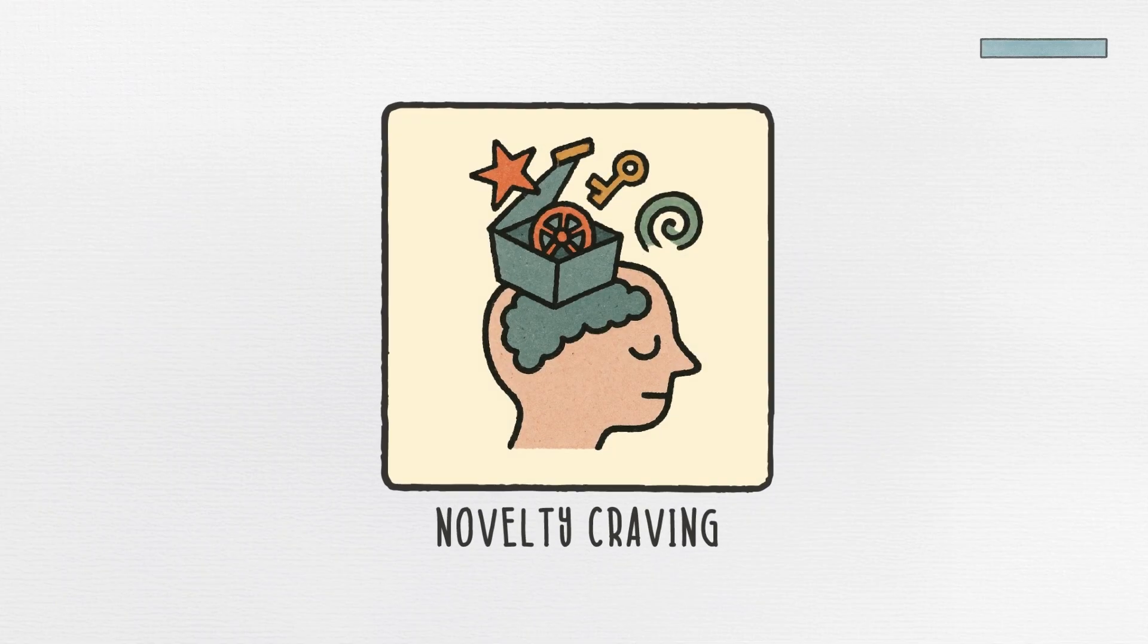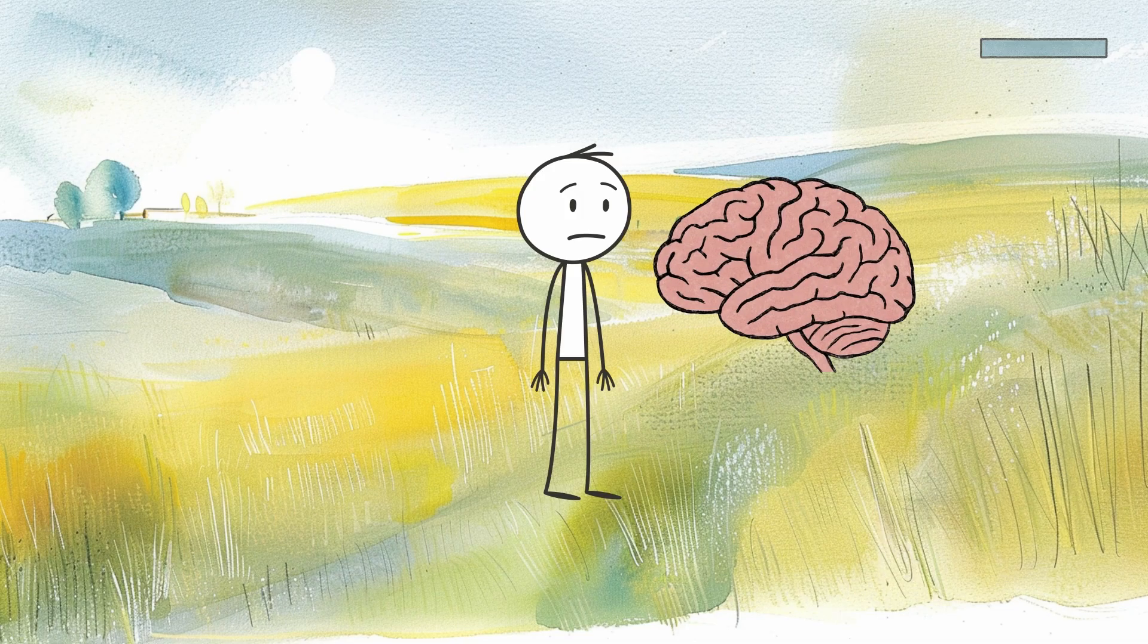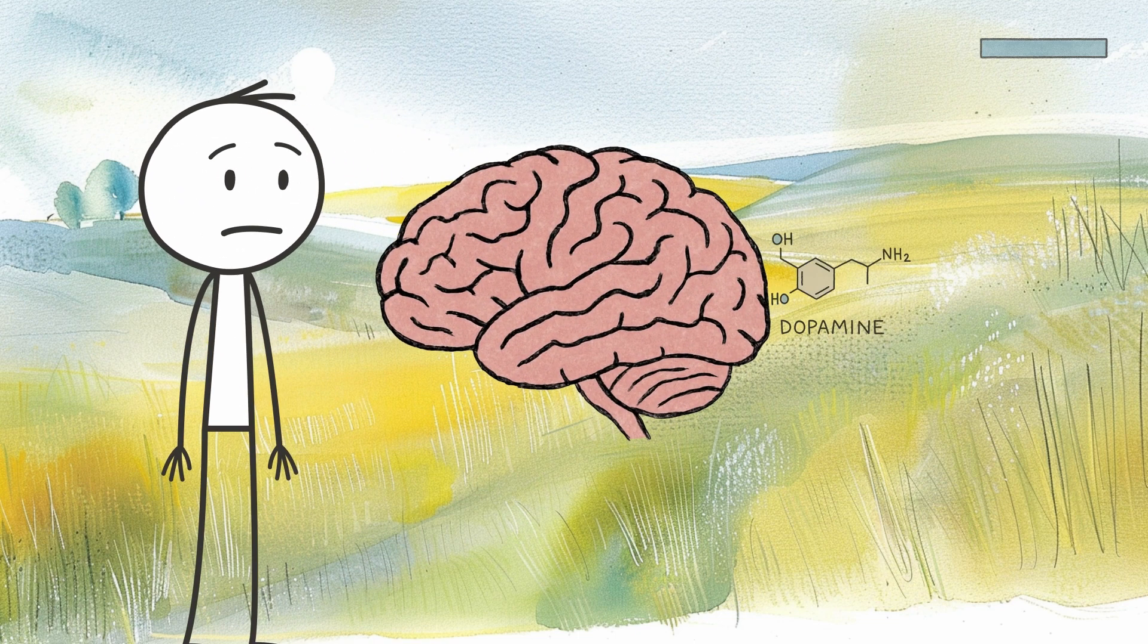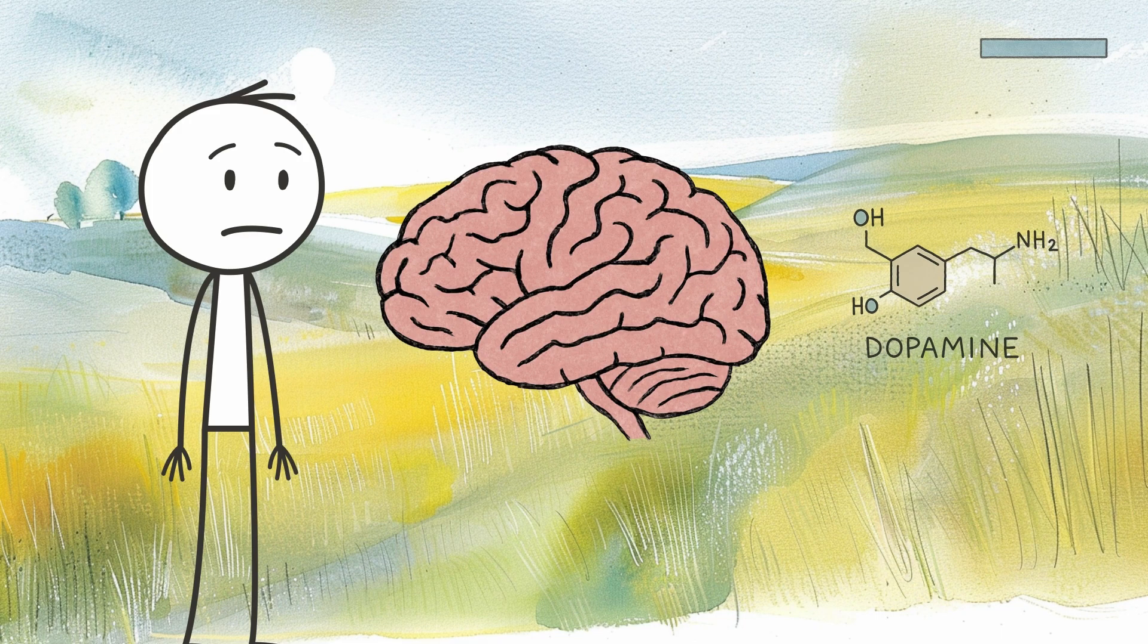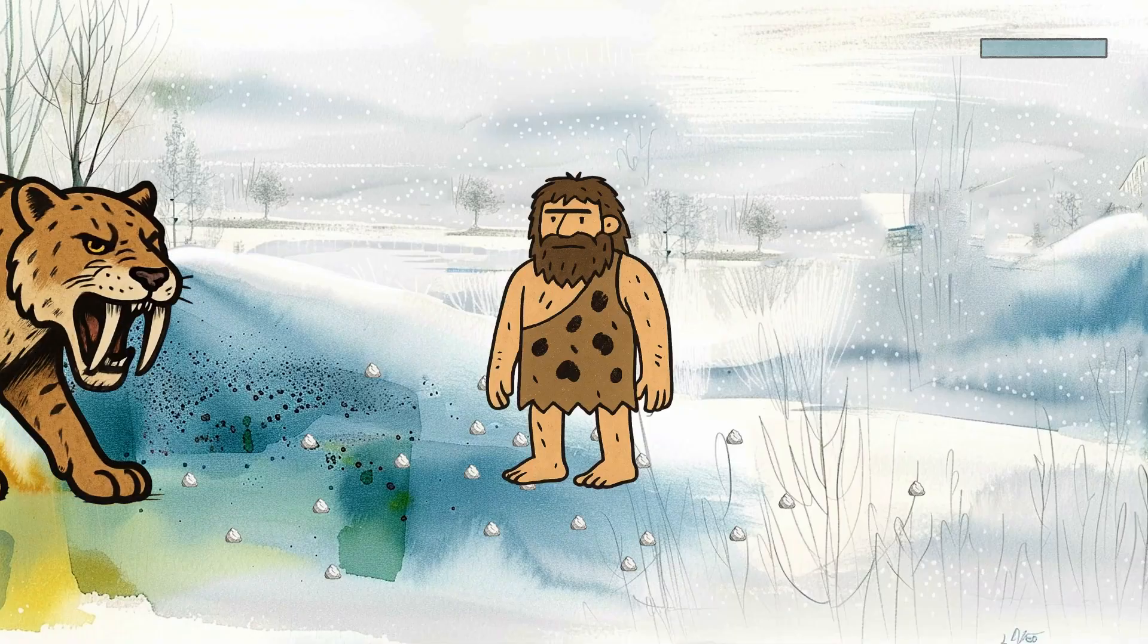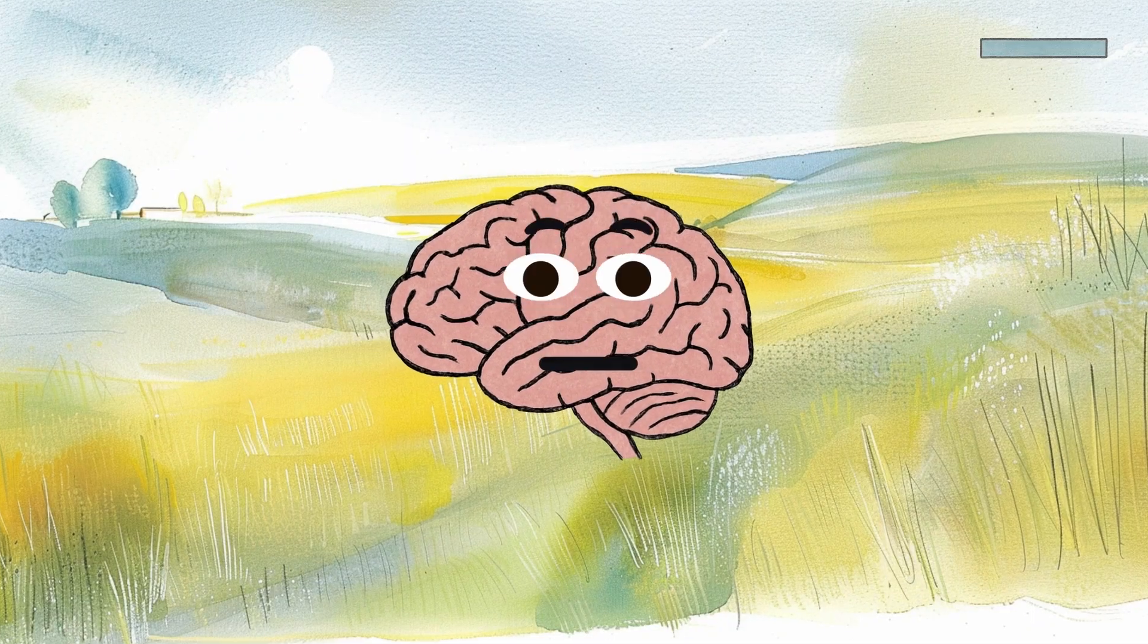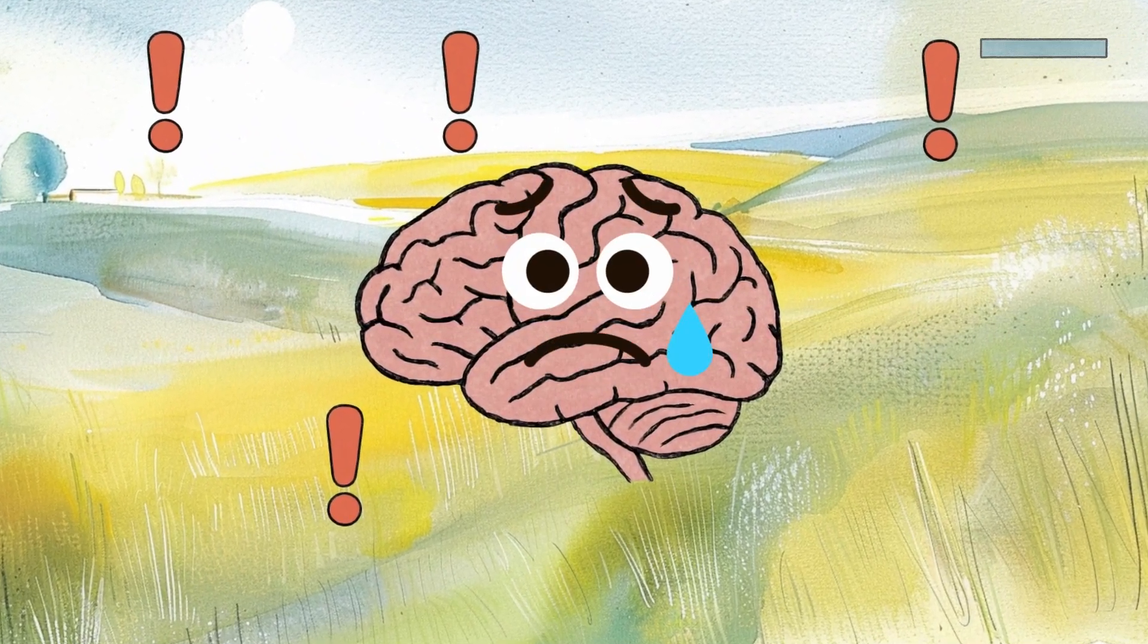Number one. Novelty craving. Human brains are wired to seek out new, unpredictable experiences. Novel stimuli trigger dopamine release, which feels good and helps you learn. This made sense when survival depended on noticing changes in your environment. The brain that got excited about new things was more likely to spot opportunities and threats.